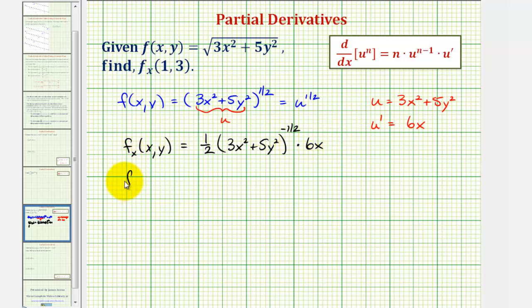Let's go ahead and simplify this. One-half times 6x would be 3x, and because we have a negative exponent here, let's move that to the denominator. So we'd have the quantity 3x² + 5y² to the positive one-half. And now we could also write this using a square root. This is equivalent to 3x divided by the square root of 3x² + 5y².